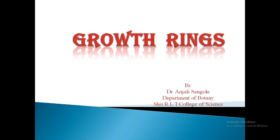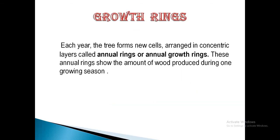Hello students, today we are going to discuss about the growth ring. What is a growth ring? The secondary xylem in the stem of a perennial plant commonly consists of concentric layers, each one of which represents a seasonal increment. Each year the tree forms new cells, and that arrangement of concentric layers is called the annual ring or growth ring.